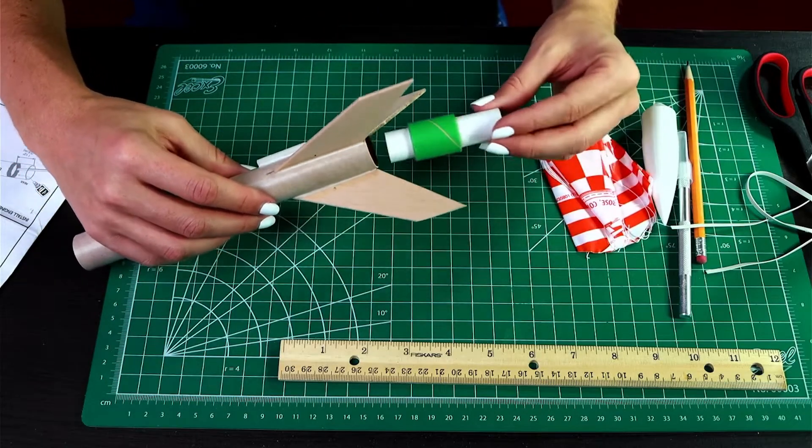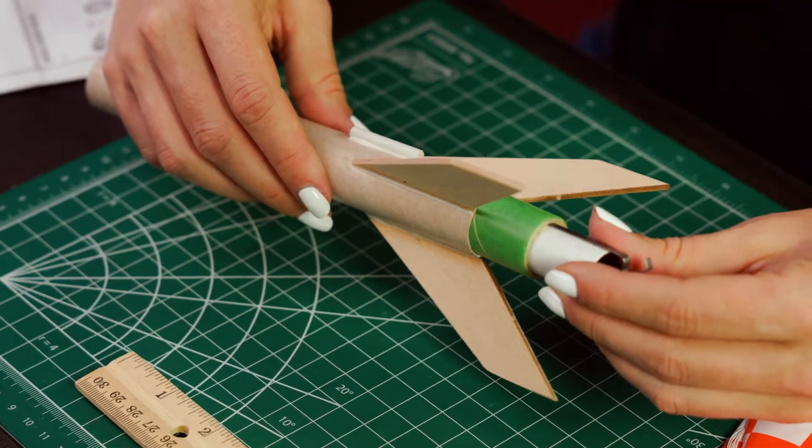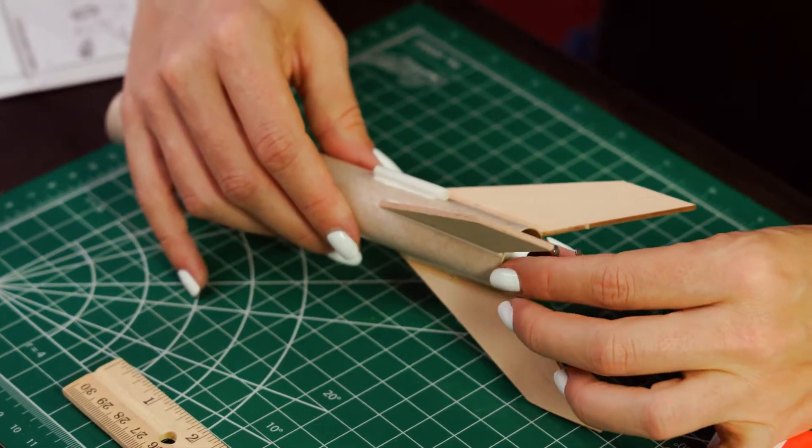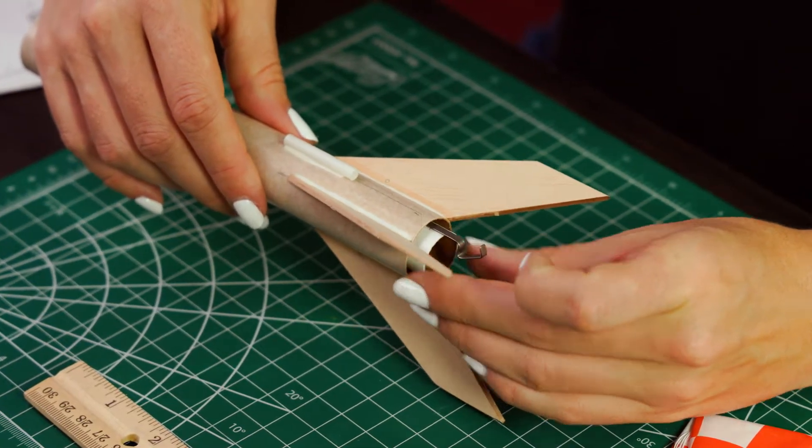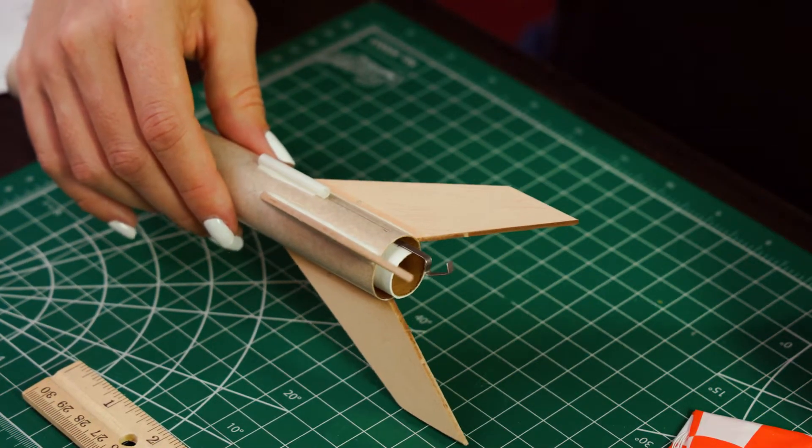So once we've got our glue in there, we will go ahead and put in the engine mount. And again, just lining that up with the three-eighths of an inch mark at the end, and then you can let that dry.